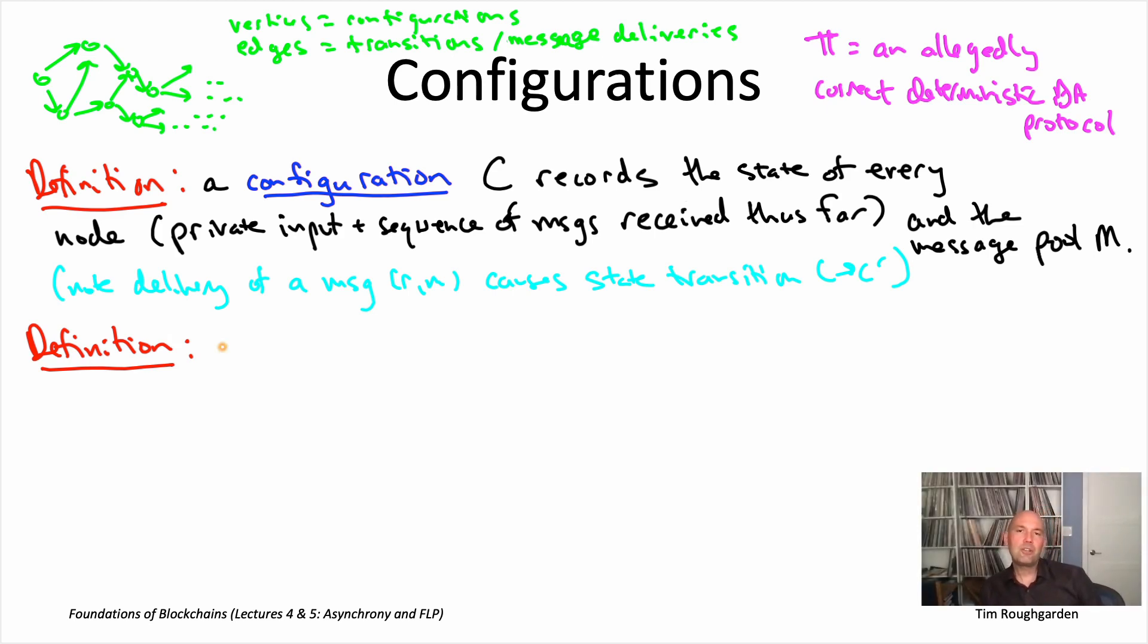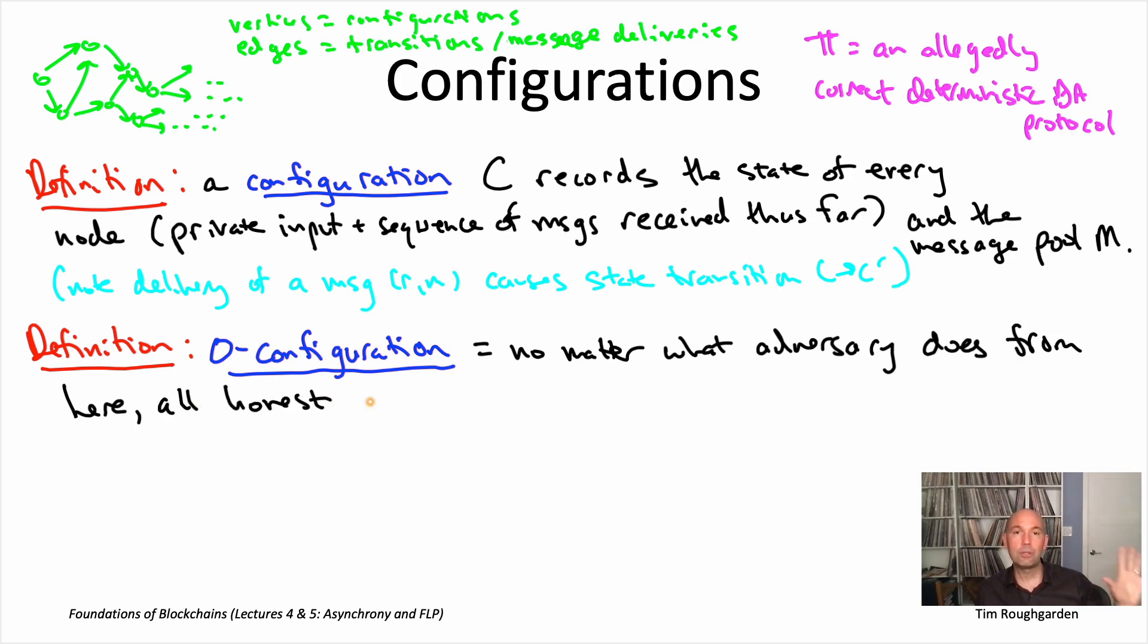So, more formally, a configuration is going to be called a zero configuration if, no matter what happens from this point on in the protocol, meaning no matter how the Byzantine nodes behave, no matter how messages are delivered, it's a foregone conclusion that when the protocol halts, the common output of all the honest nodes will be zero.